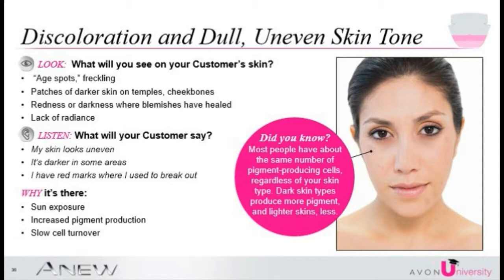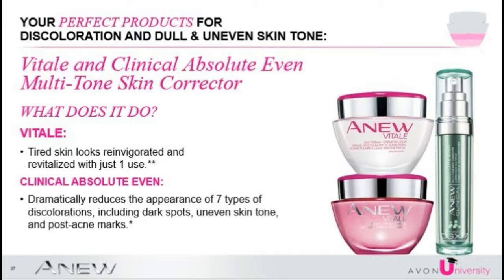Now, what we're going to do is also listen to our customer. What might your customer say about their skin? My skin looks uneven. My skin is dark in some areas. I have red marks where I used to break out. There are a few reasons for this skin concern: one is sun exposure, two is slow cell turnover, and three is increased pigment production in the skin. By using Vital and Clinical Absolute Even Multi-Tone Skin Corrector, this is your perfect product for dull, uneven skin tone.